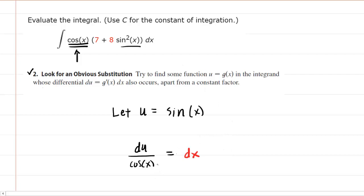After doing the derivative and solving for dx, you can begin to make your substitutions. We'll rewrite the integral. We have the integral of cos(x) multiplied by 7 plus 8 sin²(x). Look back at your original substitution. If you square both sides, you'll see that u² equals sin²(x). Therefore, we will substitute in u².